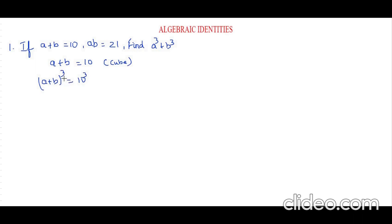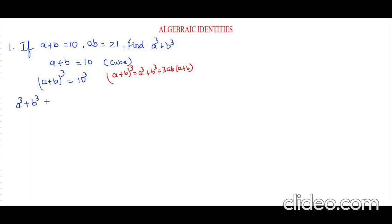Here we have a plus b whole cube, so we shall use the a plus b whole cube identity. The identity is: a plus b whole cube equals a cube plus b cube plus 3ab times a plus b. I have explained the derivatives and a few examples of this identity in my previous video, so you can refer that. Now let's apply this identity here: a plus b whole cube equals a cube plus b cube plus 3ab times a plus b, which equals 10 cube, that is 1000.